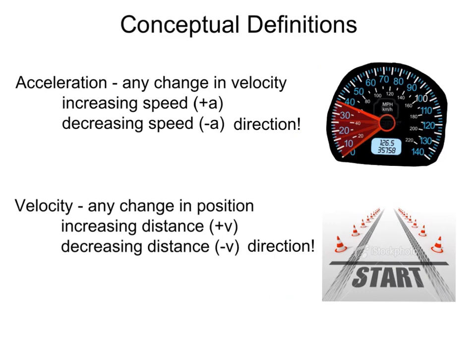Let's look at our definitions. First concept is acceleration, which is any change in velocity. We start off at a speed of zero and start increasing our speed by hitting the accelerator or gas pedal — that's a positive acceleration rate. Or maybe we're at a certain speed and hit the brakes, decreasing our speed, which gives us a negative acceleration. Direction is important. Second concept is velocity — that's any change in position. Running away from the starting line gives a positive velocity because we're adding distance. Running back towards the starting line gives a negative velocity because we're subtracting distance. Again, direction is important.